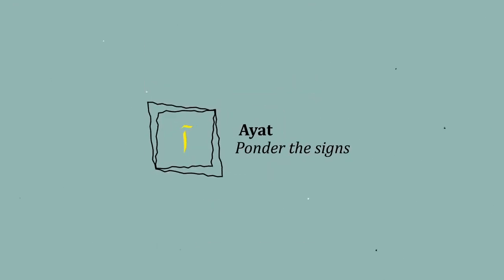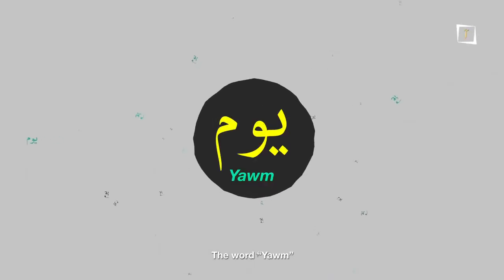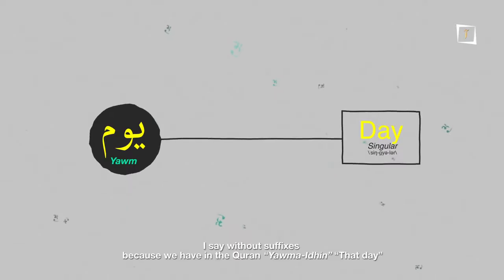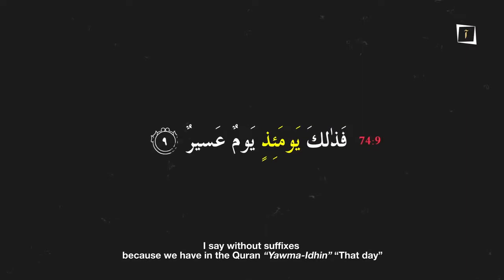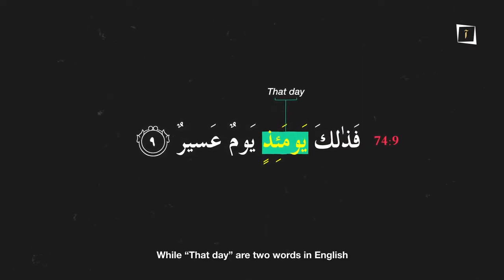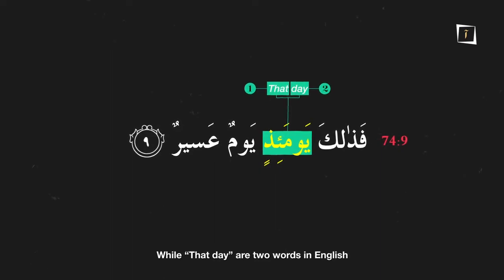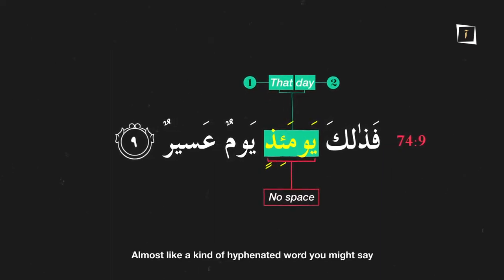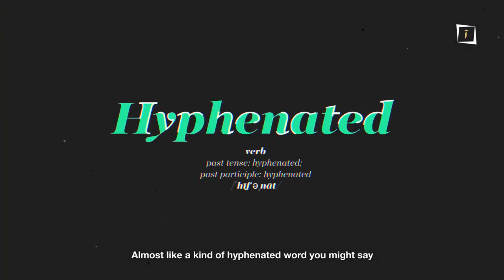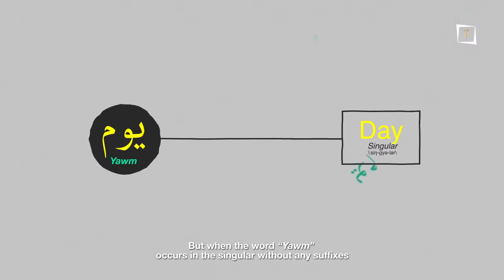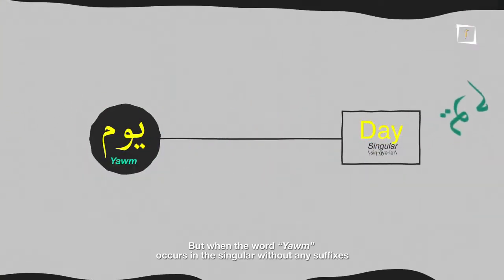The word 'yawm,' which means 'day' in the singular, without any suffixes — I say without suffixes because we have in the Quran 'yawm' meaning 'that day,' which in Arabic is written together without any space, almost like a hyphenated word. But when the word 'yawm' occurs in the singular without any such suffixes,